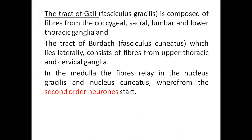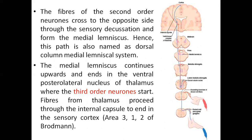In the medulla, the fibers relay in the nucleus gracilis and nucleus cuneatus, where the second order neurons start. The fibers of the second order neurons cross to the opposite side through the sensory decussation and form the medial lemniscus. Hence this pathway is also named the dorsal column medial lemniscal system. The medial lemniscus continues upwards and ends in the ventral posterior lateral nucleus of the thalamus.